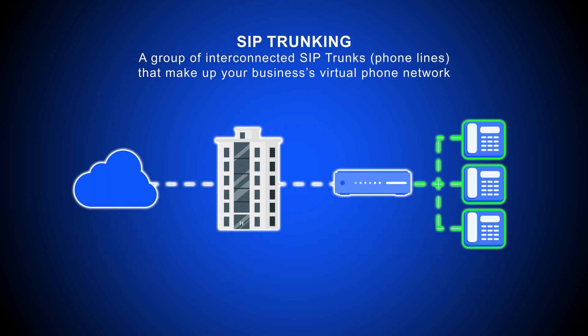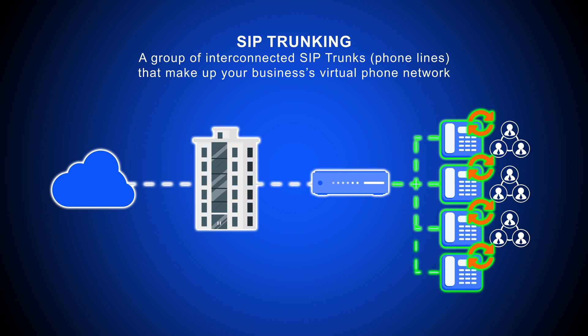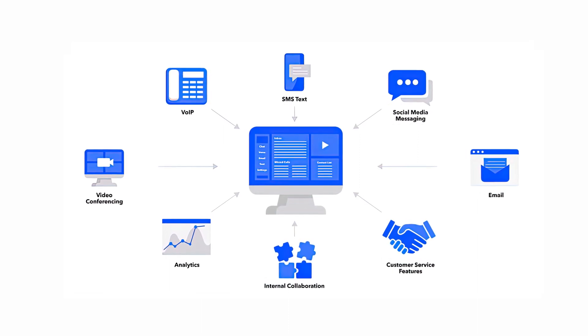SIP trunking is a group of interconnected SIP trunks, or phone lines, that make up your business's virtual phone network. Each SIP trunk, much like an analog phone line, is assigned to an individual, department, or another group of users. But unlike PRI, SIP trunking makes it much easier to add, update, or remove additional phone lines, because they don't require additional hardware or come with a lengthy setup process. Plus, SIP trunks don't just manage VoIP voice calling — they enable real-time, omnichannel unified communications across voice, video messaging, virtual faxing, and more.